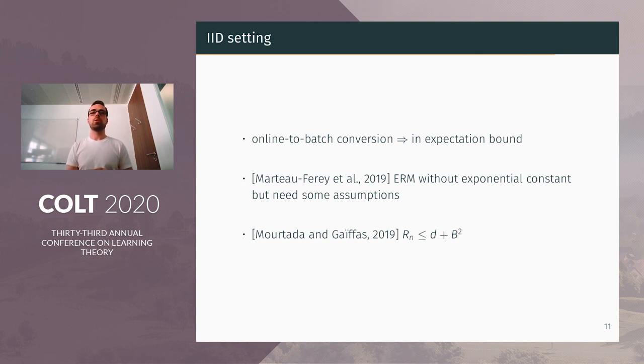Our algorithm is designed for the online setting. But with online-to-batch conversion, we can make it suitable for the batch setting. And we will have some bound on the excess risk in expectation. We can compare our results now to other works in the IID setting. For example, there is a work that analyzes empirical risk minimization. And they show that with some additional assumptions, they can achieve a logarithmic regret without exponential constants. But they need this additional assumption, because if not, the lower bound of Azoury would have applied.